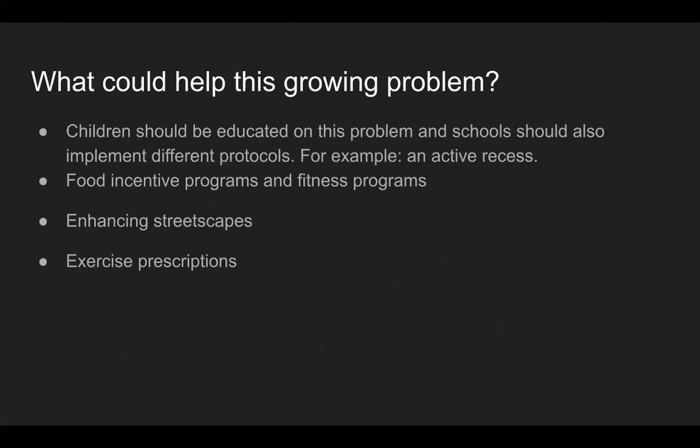What could help with this growing problem? Children should be educated on this problem and schools should implement different protocols. For example, an active recess — schools should introduce an active recess break before lunch that is planned, inclusive, and actively supported with different games or activities to help children be more active. Also educating kids about nutrition in a fun way could help implement a healthy lifestyle, and showing a healthy lunch or breakfast during meal times provides a good example for children.